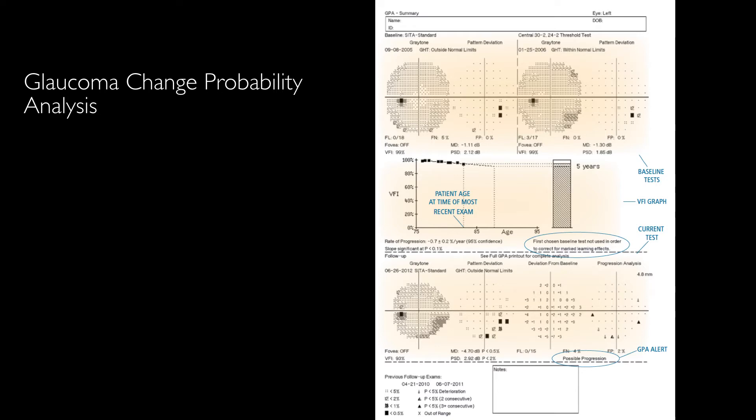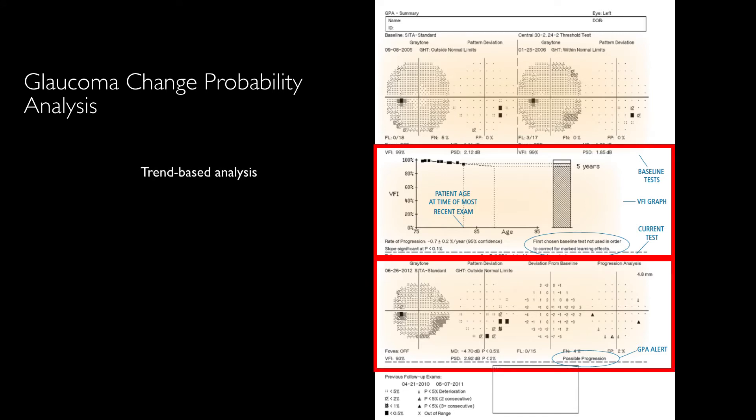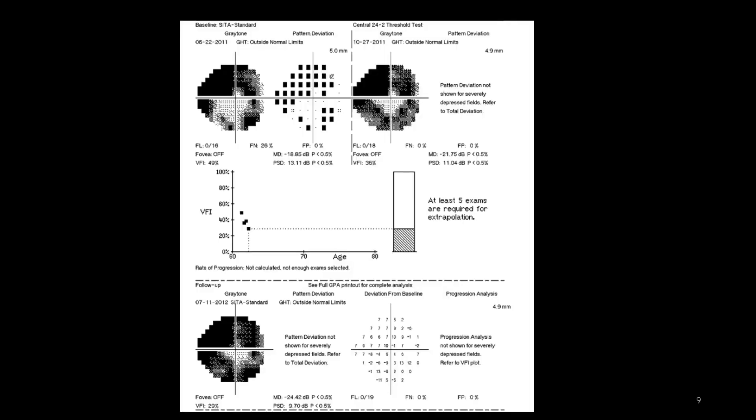The glaucoma change probability analysis consists of three sections. At the top, we have the baseline visual field. In the middle row, we have the VFI graph. At the bottom, we have event-based analysis. To have this printout, we need at least five visual fields.